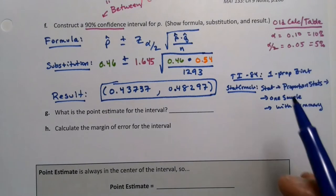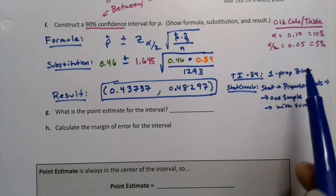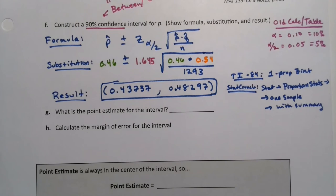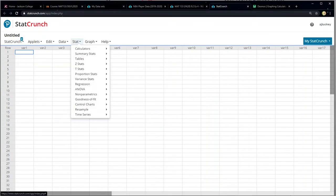So I just wrote little calculator instructions for myself right there. So it's one prop Z int. StatCrunch actually takes a little bit more instruction to get there, but it's stats, proportion stats, stats, one sample - all the two sample stuff is chapter 11. And with summary, we don't have the raw data here. We have a summary. So right there.